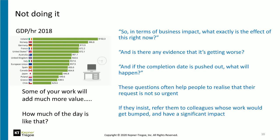If you try asking for hard data from colleagues and managers about the issues they're asking for help with, often people realize the lack of importance themselves. Look at the blue questions: 'What exactly is the impact of this right now?' — 'Well, the thing hasn't gone live yet, so actually it's not.' 'Is there any evidence that the thing's getting worse?' — 'Well, no, not really.' 'What happens if the completion date is pushed out?' — 'Well, the boss will be cross.' So I'm not hearing anything that drives me to drop everything for this. Many of the things we're asked to prioritize actually aren't that important. Asking questions like this for hard data will often get people to realize their request is not as urgent as they think. And if they insist, you can always refer them to colleagues whose work would be bumped and have a significant impact.